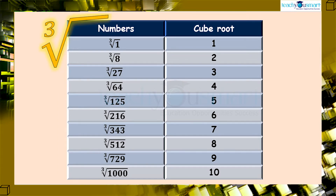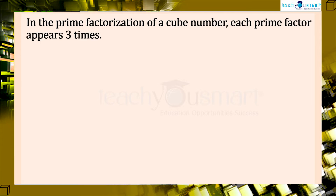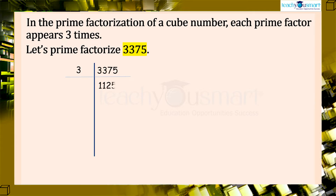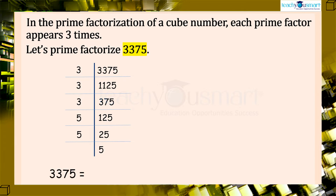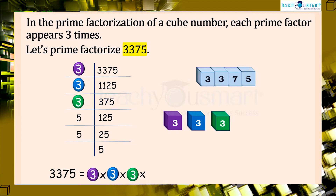Let's see some methods to find the cube root of a given number. In the prime factorization of a cube number, each prime factor appears three times. Let's prime factorize 3375. It can be expressed as the product of its prime factors. That is, 3375 equals 3 × 3 × 3 × 5 × 5 × 5.